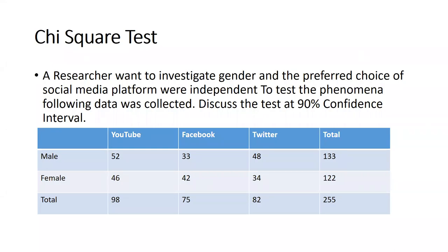Let's begin one more new problem. In this particular problem we have to do a chi-square test. In this chi-square test we have a different kind of degree of freedom because we have two rows — male and female category — and three columns. That means we are checking three social media platforms: YouTube, Facebook, and Twitter.